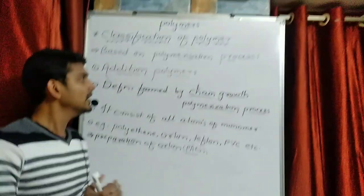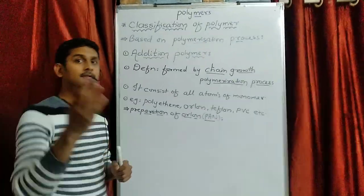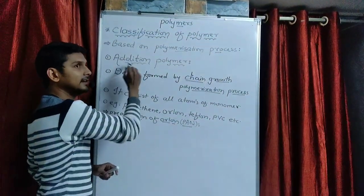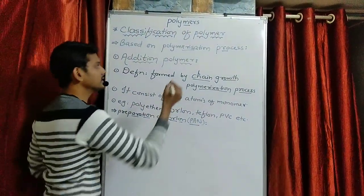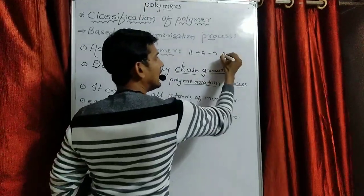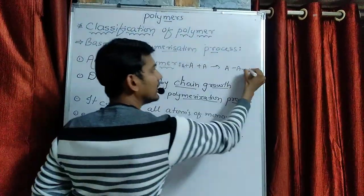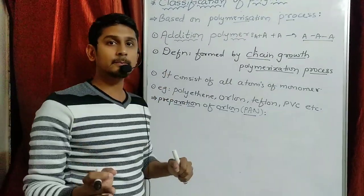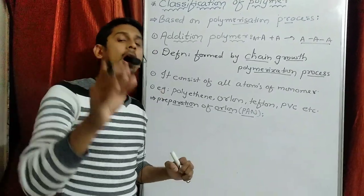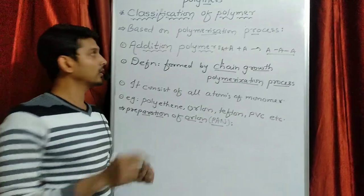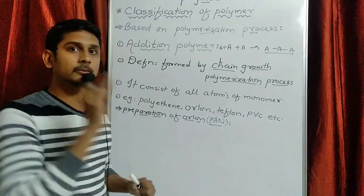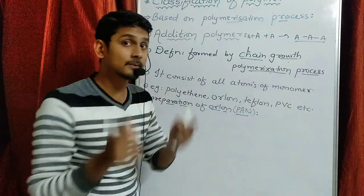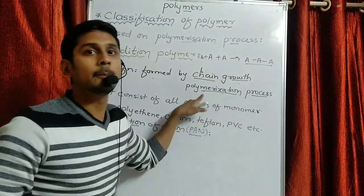So we start with the first topic: what is addition polymer? The name itself is telling us. This polymer is formed by the addition process. When A adds to A, then A adds to A again — this is chain growth. Addition polymer is a polymer which is formed by a chain growth polymerization process.